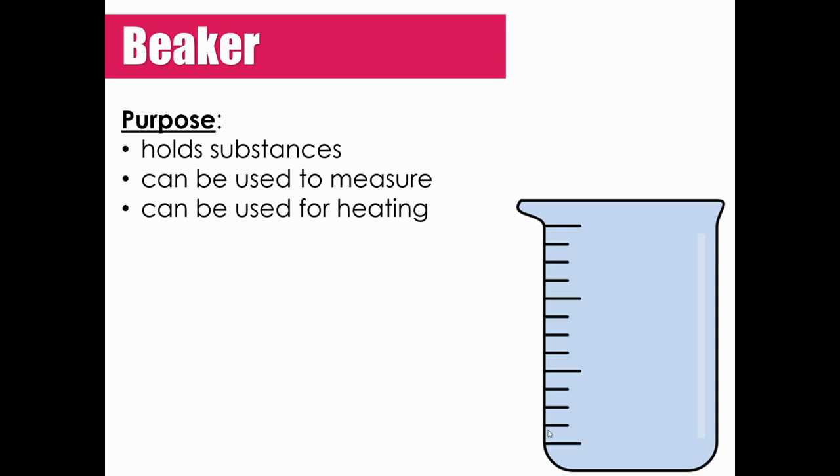On the outside or the exterior of the beaker, there will be measurements displayed. And that's how you know, like if you have to put 50 milliliters of water into the beaker, you can measure directly with the beaker. That'll be different with the test tube. You can't measure directly into the test tube. You'll have to use like a graduated cylinder to measure out the volume of the liquid you need before you put it in the test tube. But the great thing about a beaker is you can measure directly inside the beaker.